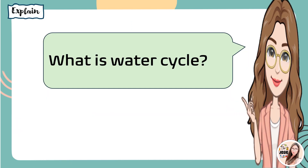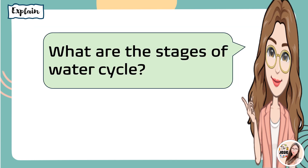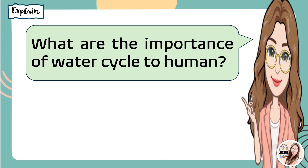Once again, what is the water cycle? Very good. When you say water cycle, it is the continuous movement of water between Earth's water supply and the air. What are the stages of the water cycle? You're right. What are the importance of the water cycle to humans?